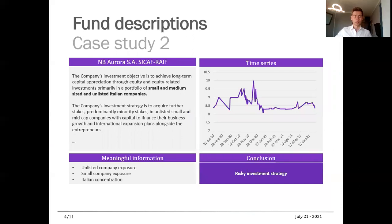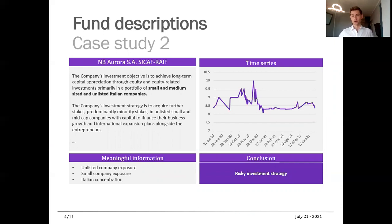Moving on to the next example, we have another fund whose investment objective is to achieve long-term capital appreciation through equity and equity-related investments, primarily in a portfolio of small and medium-sized and unlisted Italian companies. A number of alarms go off here: we have an unlisted company exposure, which is immediately something to be aware of. There's also an exposure to small companies, and a concentration to a small market — namely the Italian one. Looking at the time series, it's definitely less frequently updated than the last one, which could be tied to the fact that it's investing in unlisted companies, so liquidity might be an issue. Due to this, this is something that would probably be considered a risky investment strategy.